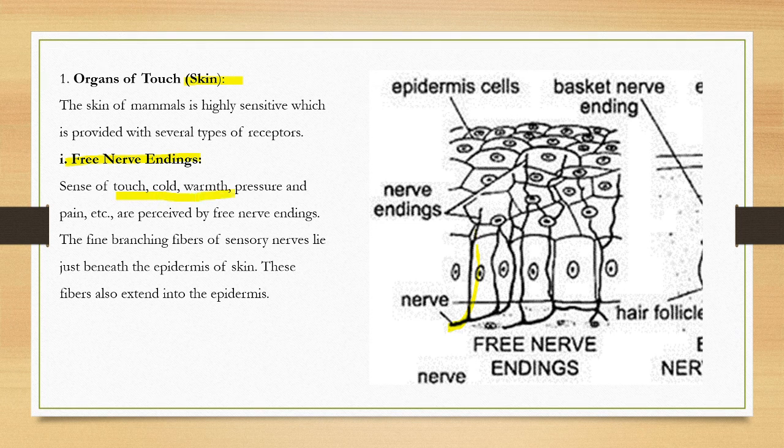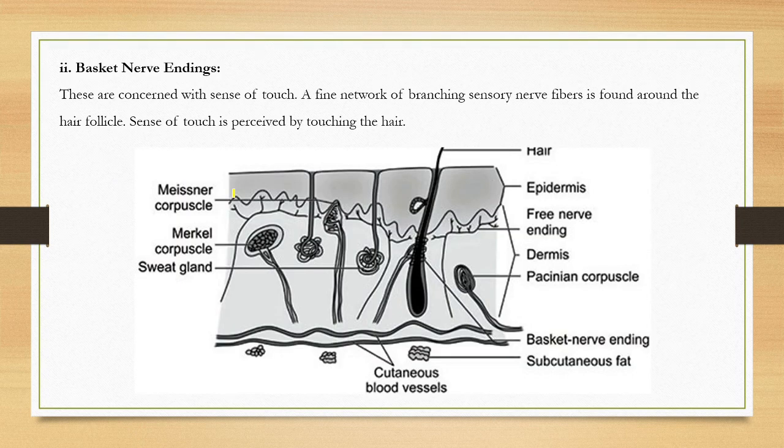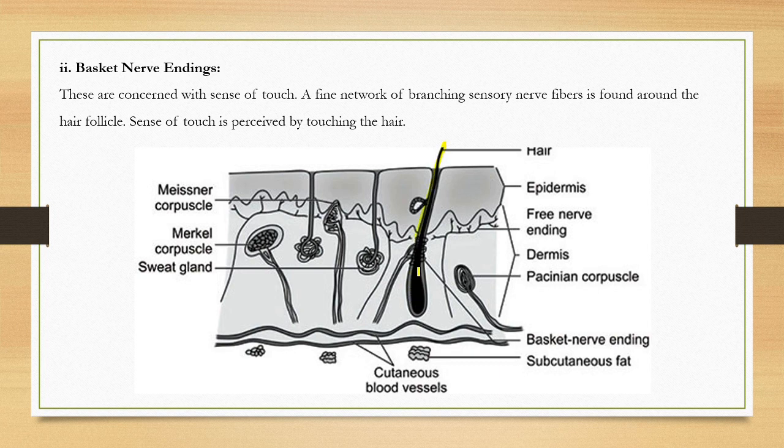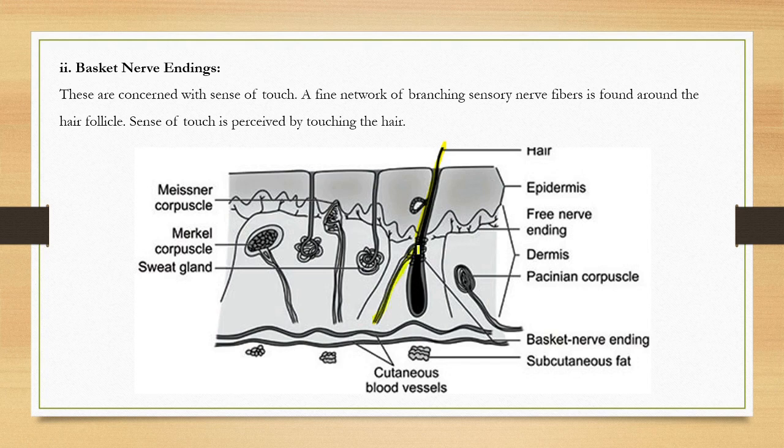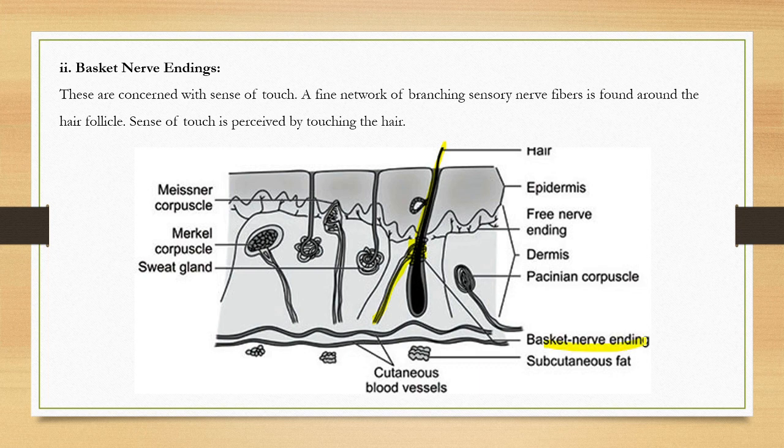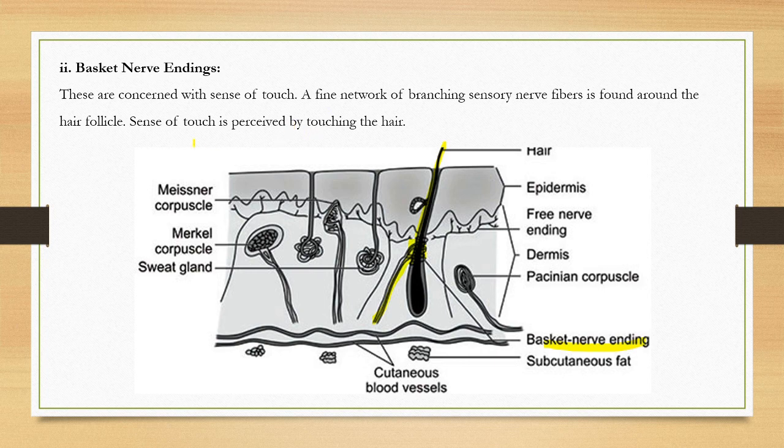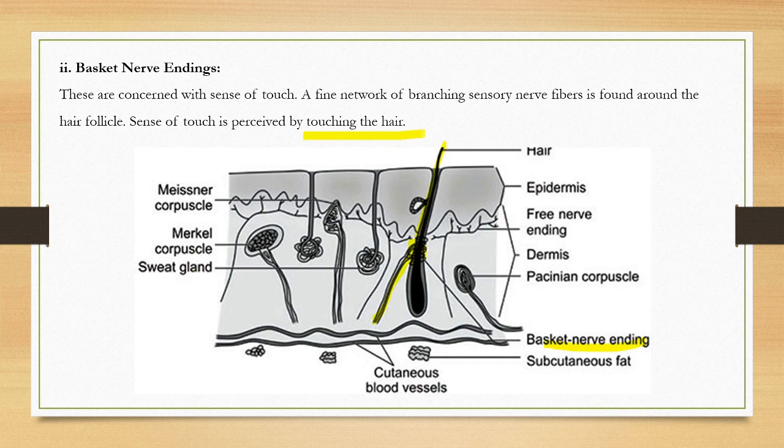Second is the basket nerve endings. These are the hair cells. You can see at the root of the hair, this is called basket nerve ending. This helps to perceive the touching, so sense of touch is perceived by touching the hair.